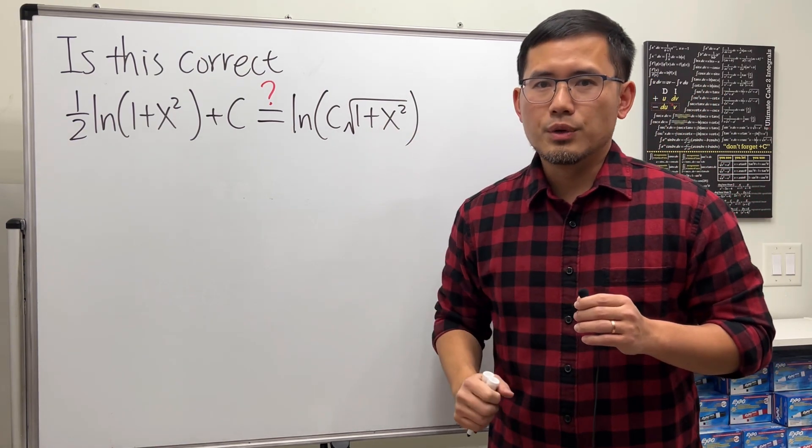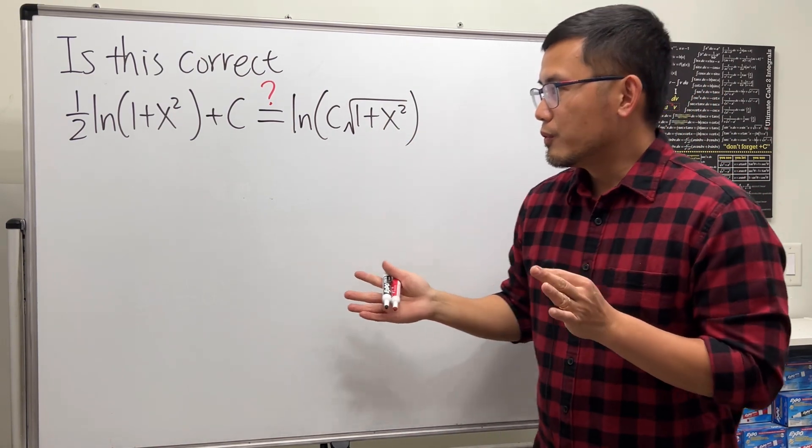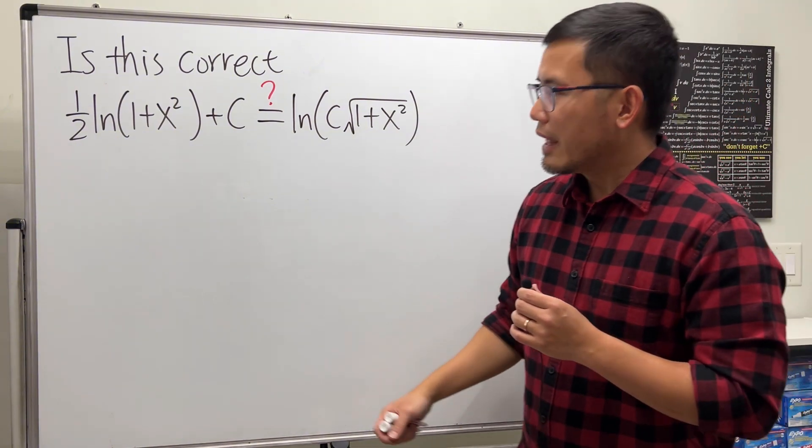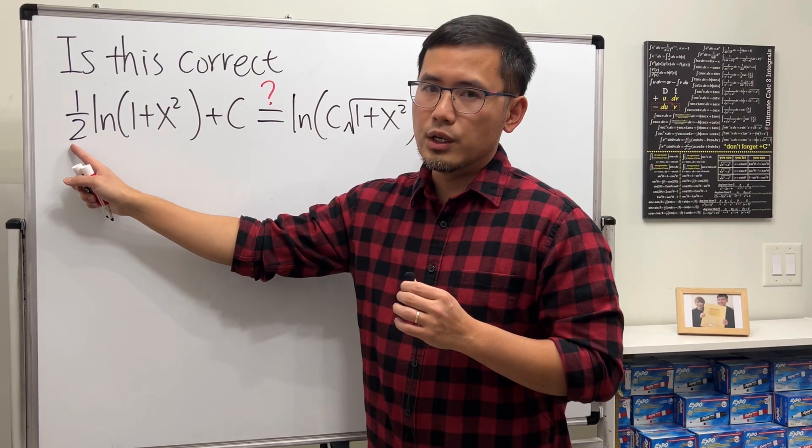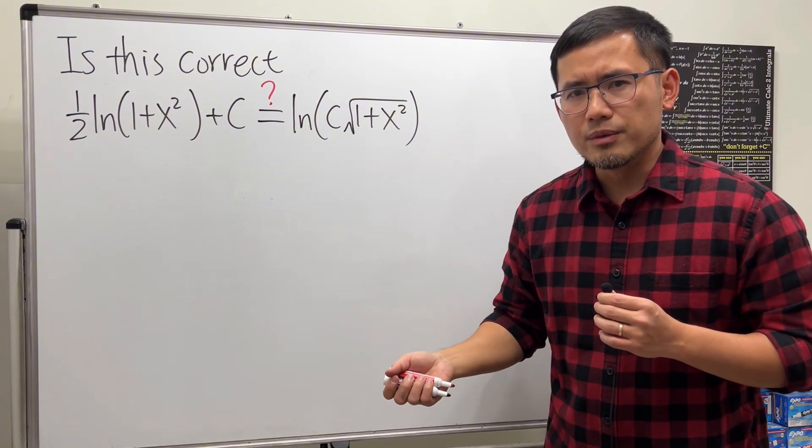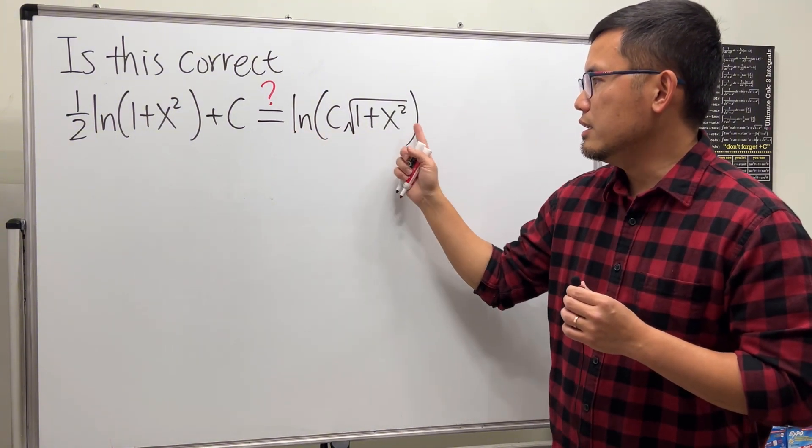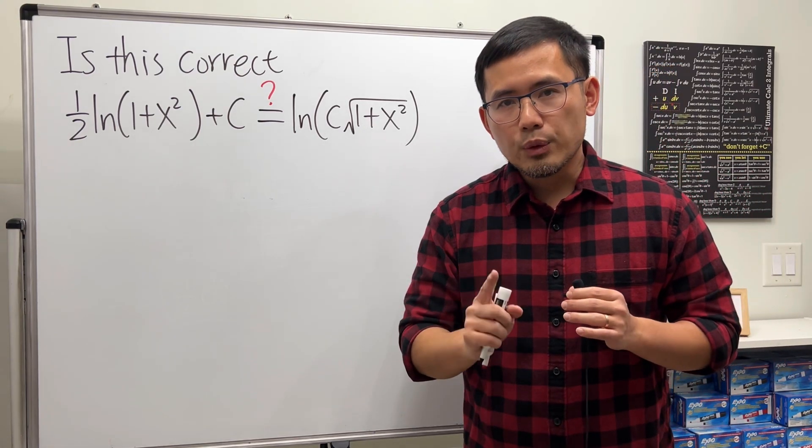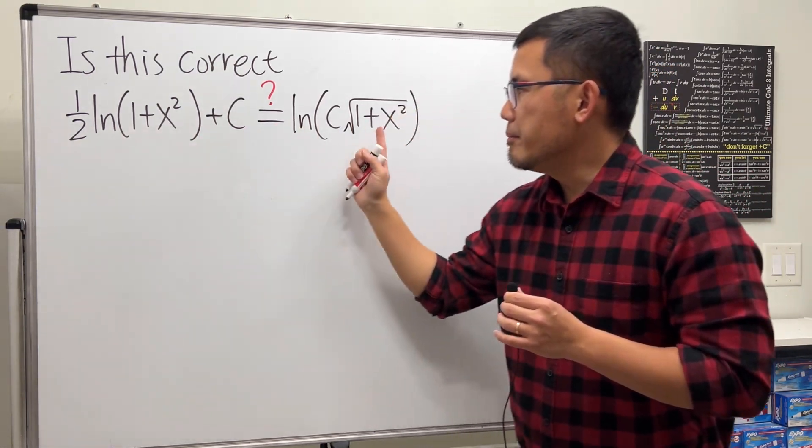Well, firstly we need to know where did this come from. I think it's because you are doing an integral and you end up with this for the answer. Then if you check the answer in the back of the book, they're telling you that this is the answer. If you're doing an integral, I will tell you both of them are okay to be the answer for that integral.